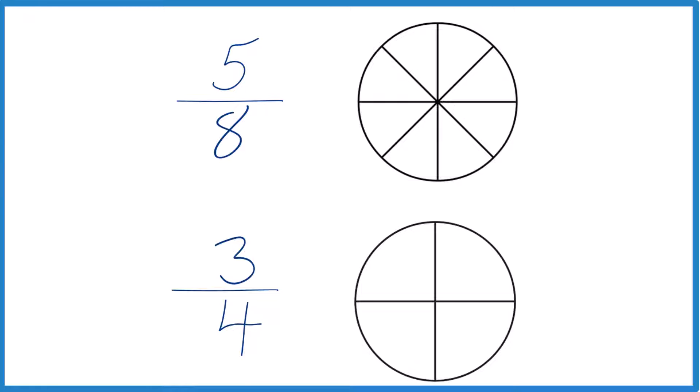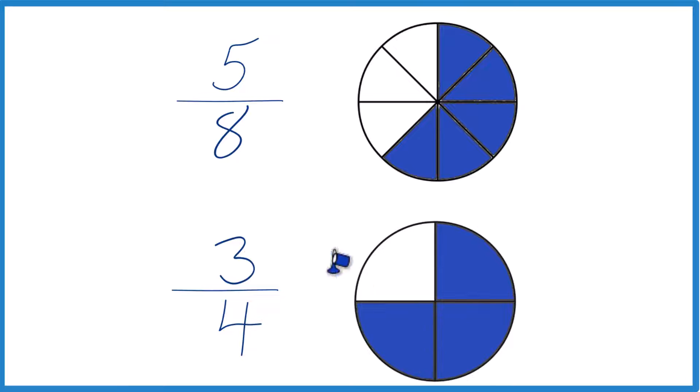You could think of it this way, too. We colored in five sections, 1, 2, 3, 4, 5, here, and down here, we colored in three of the four sections, 1, 2, 3. Again, you can see that more area of the circle for 3 fourths is colored in. So 3 fourths is greater than 5 eighths.